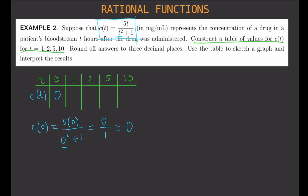How about C of 1? C of 1 is: substitute 1 for T, so you get 5 times 1 over 1 squared plus 1. That gives you 5 divided by 2, and that is equal to 2.5. So C of 1 is 2.5.